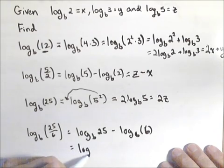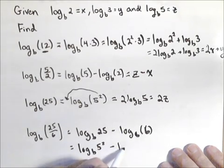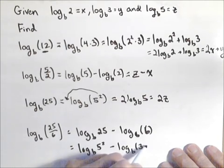Well, we already did log base b of 25. We know we can write that as 5 squared. Now, log base b of 6, I could rewrite as log base b of 3 times 2.